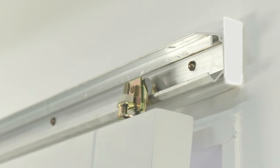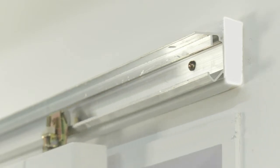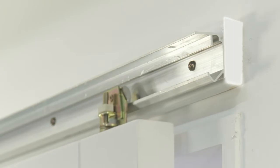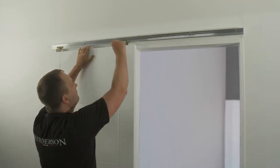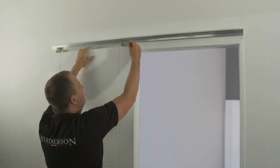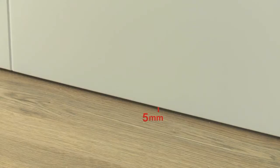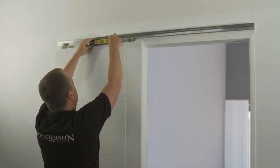Test that the door is running correctly and smoothly by sliding the door up and down the track. Using the adjustment screw built into the hangers, adjust the height of the door so there is the correct clearance gap under the door and level off the door if required. Use a spirit level to check this.